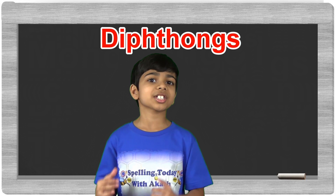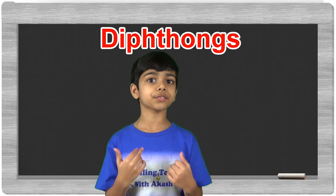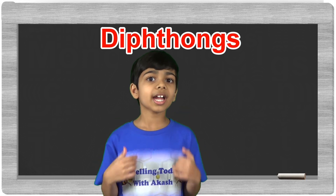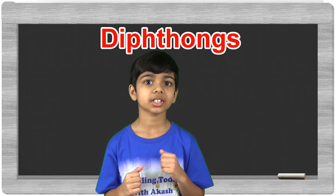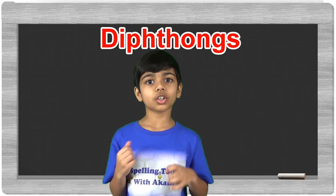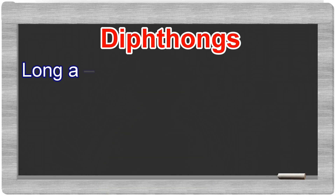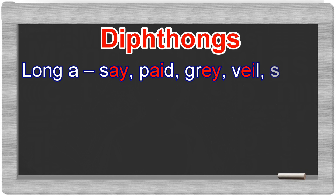Here are some common examples of diphthongs that have vowel sounds. For the long A sound, there's say, paid, gray, veil, and stake.